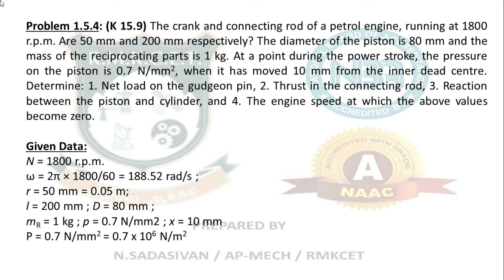Mass of the reciprocating parts equals 1 kilogram. Pressure on the piston is 0.7 Newton per mm², which equals 0.7 into 10⁶ Newton per meter square. The pressure value occurs at a point where the piston has moved 10 mm from the inner dead center.